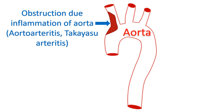Among the blood vessel diseases, an important variety is obstruction due to inflammation of the aorta, known as aortoarthritis. It is also known as pulseless disease, as arm pulses may be absent due to obstruction of the blood vessels. It is a progressive disease, with more and more blood vessels getting affected as time passes.